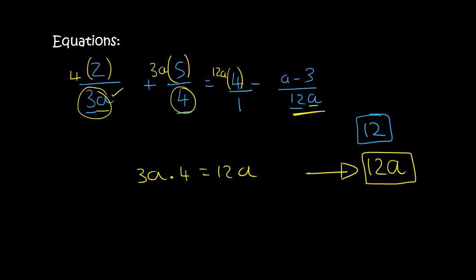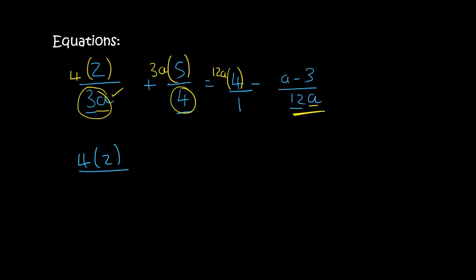This one just gets multiplied by 4 because it already has the a. So you say 4 times 3a, and that gives you 12a. So if we did have to go write all the denominators, you would have 4 times 2 over 12a plus 15a over 12a equals 48a over 12a minus a minus 3 over 12a. You can see that they all have 12a's now, and that's what we're trying to do.